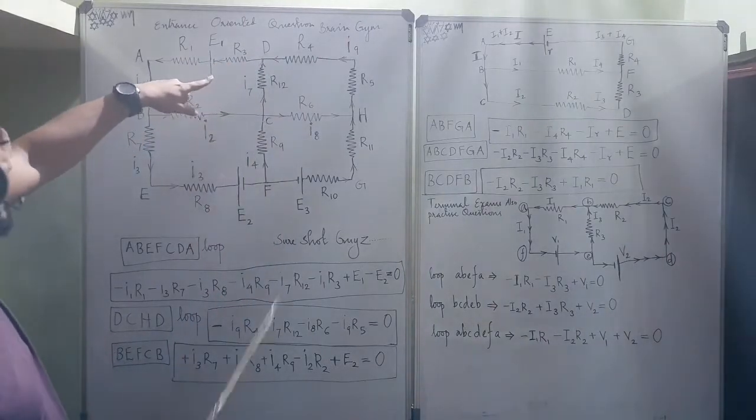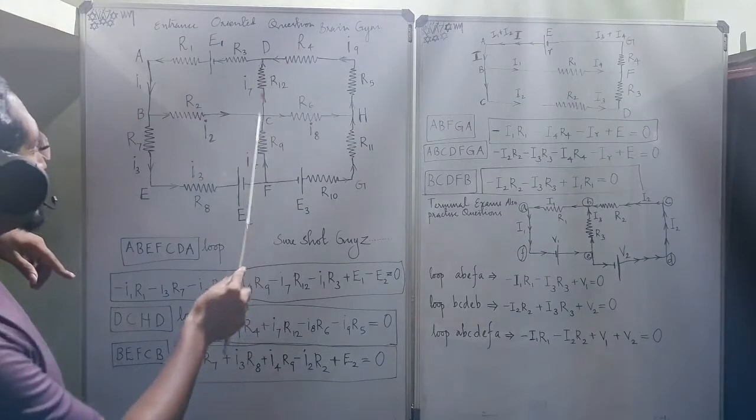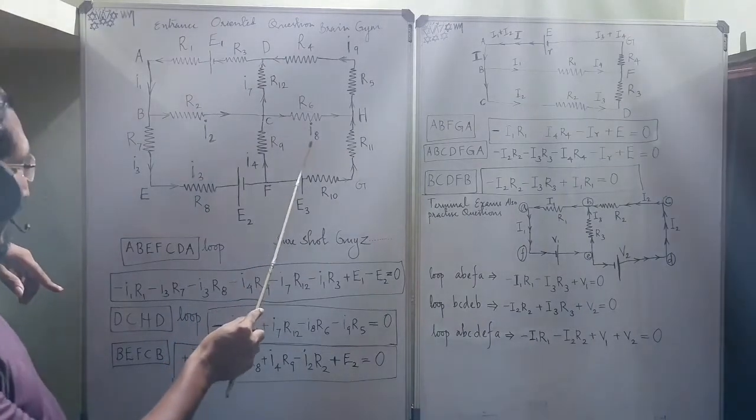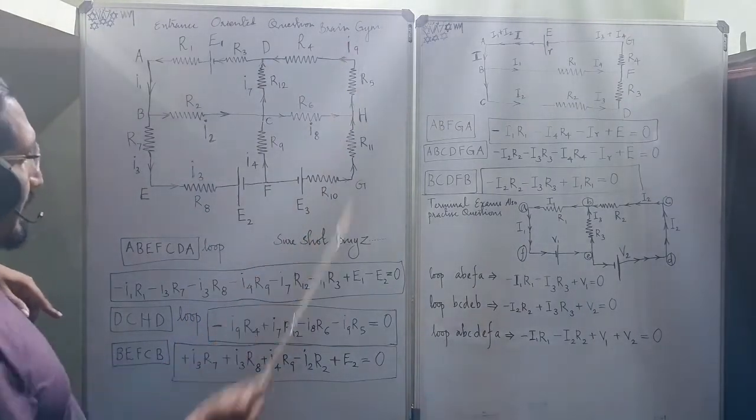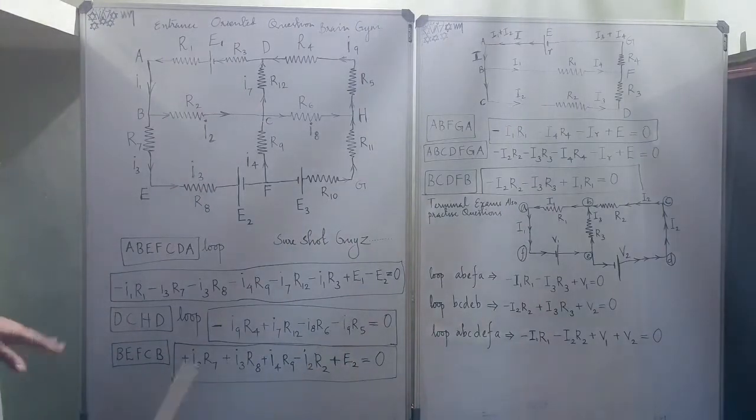This is coming again is this, I7. So, plus I7*R12. Again it is anticlockwise direction R6, I8*R6. Then comes I9*R5 is equal to 0. This loop is okay.